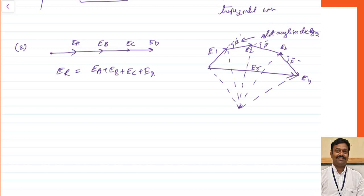Let us see how to calculate this value. I am briefly discussing here; we will discuss in detail in synchronous machines. Points A, B, C, D, and let us assume this point is E. Each angle made will be equal to beta. Let us assume there are m conductors per pole per phase. The total angle will be the number of conductors multiplied by the slot angle of each one, where beta equals 180 degrees divided by the number of slots per pole.